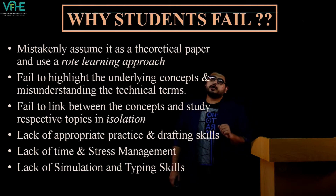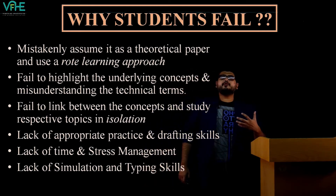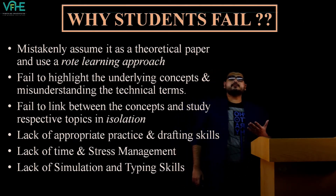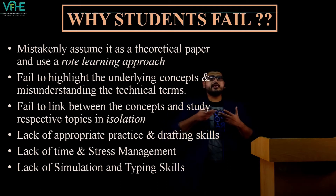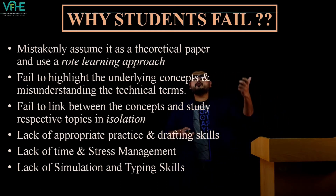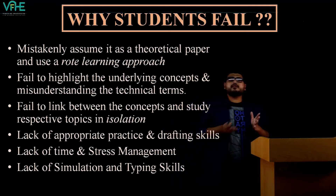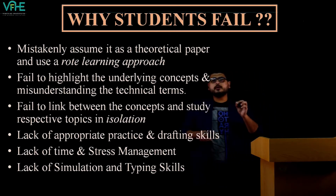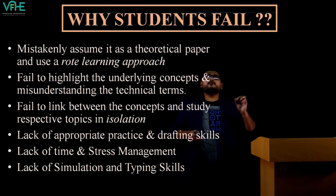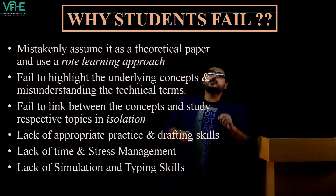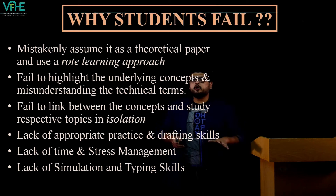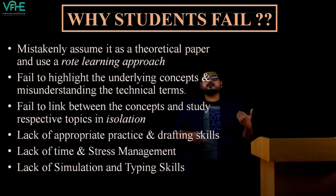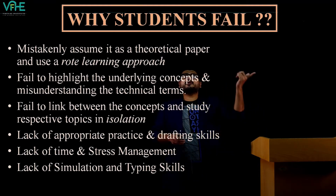Students also fail to highlight underlying concepts and misunderstand technical terms — the audit jargons. These are important because the examiner is looking for professionalism. After passing this paper, you'll represent ACCA in any audit firm. The passing ratio for Audit and Assurance is only 35 to 40 percent, one of the two lowest in the skills module alongside Performance Management.